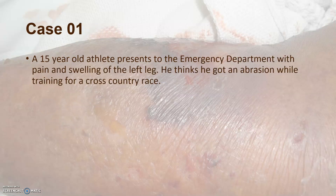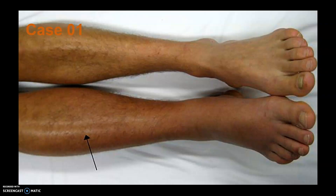Let's start with a 15-year-old athlete who presents to the emergency department with pain and swelling of the left leg. He thinks he got an abrasion while training for a cross-country race. This is what the leg looks like. Pause the video and think about what this is and what organisms might be involved and their characteristics.